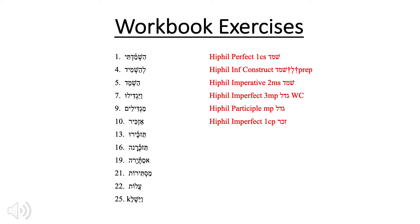What about number ten? Number ten is a very straightforward Hiphil imperfect 1cp. The hirik yod in the middle of the stem gives away that it's a Hiphil. We have the preformative here, which is an aleph because this is a first person imperfect. The aleph is key to that. We also have the patah underneath the aleph, which again confirms that this is indeed a Hiphil.